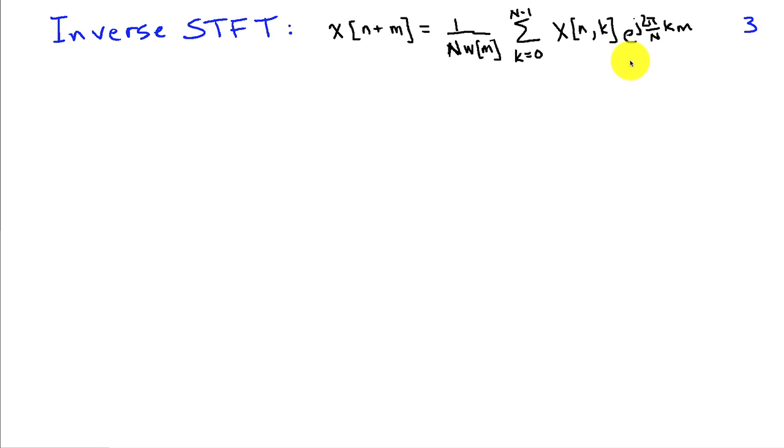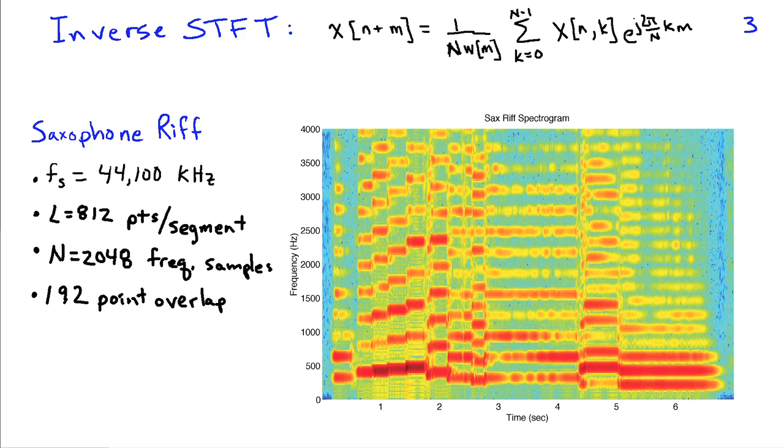We're going to look at an example here from a saxophone playing a little riff. The data was recorded at a 44,100 kilohertz sampling rate. In computing the short time Fourier transform and the corresponding spectrogram, we're going to use L equals 812 points per segment, a DFT length of 2048, and each segment will overlap by 192 points.